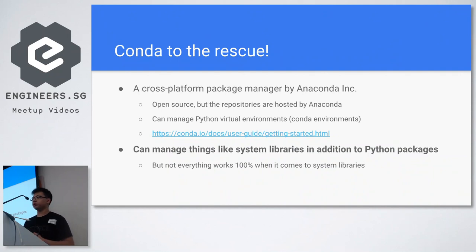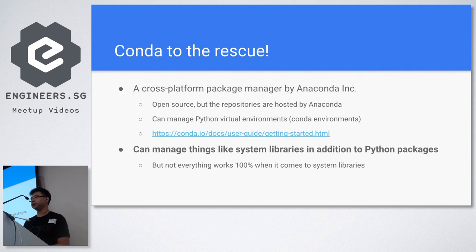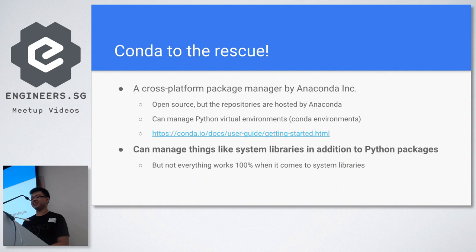One way to solve this is to use a package manager like conda. Conda is very popular in the machine learning community because it can manage virtual environments and also many libraries. Contrary to popular belief, conda is not just a Python package manager - it can also manage system libraries like zlib. It has a very powerful dependency solver: you specify the packages and versions you need, and conda - though it may spin for a while on the 'solving dependencies' screen - will eventually give you the environment you want.